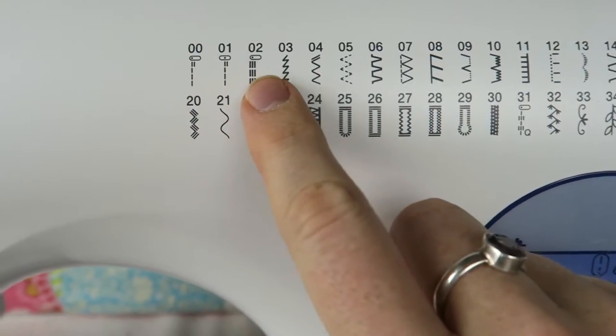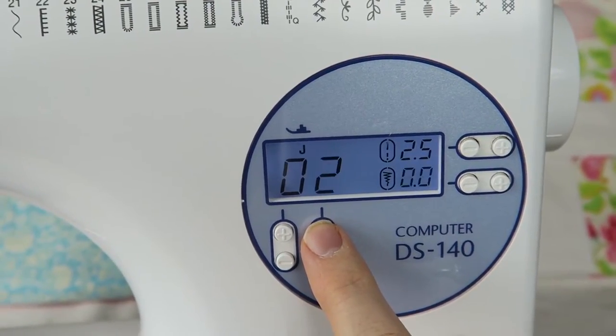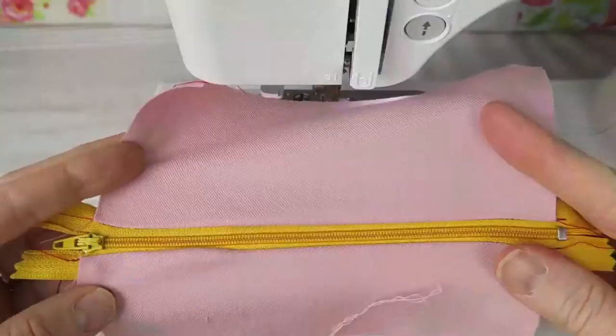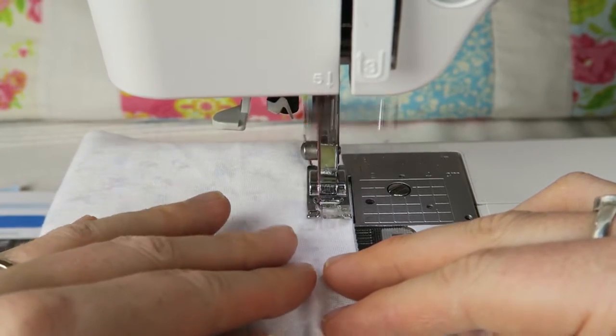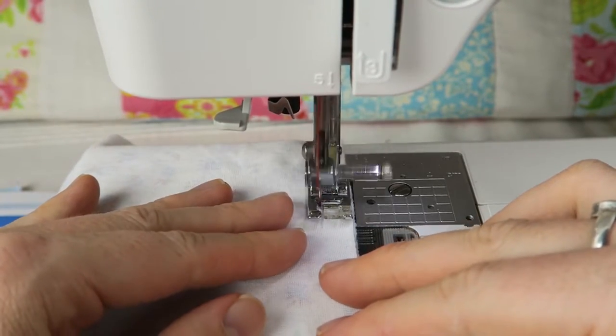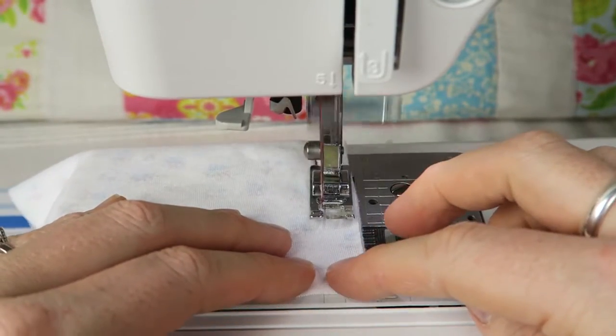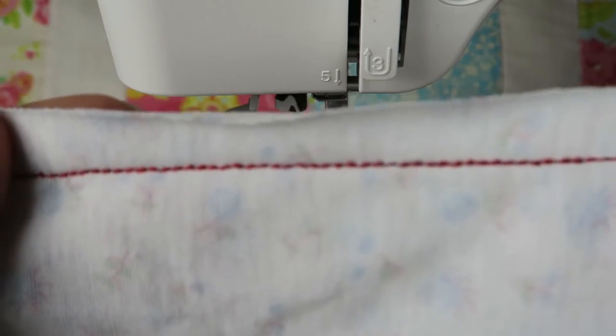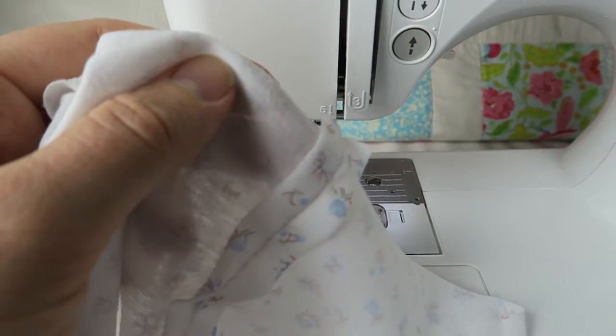Next we're going to have a look at the triple stretch stitch - that's a mouthful. We need the foot J again, so this is really good for sewing stretch fabrics and for attaching sleeves, sewing inseams, and for decorative stitching. It keeps the fabric nice and stretchy and elastic, so it's a really good stitch to use for that.